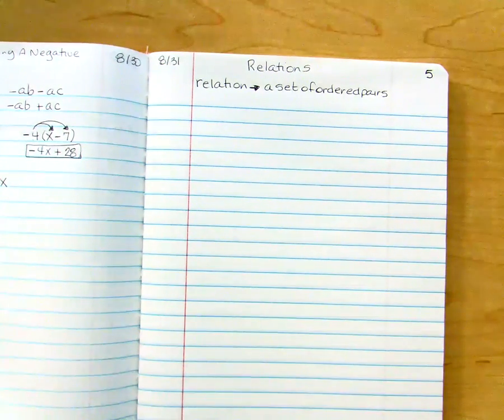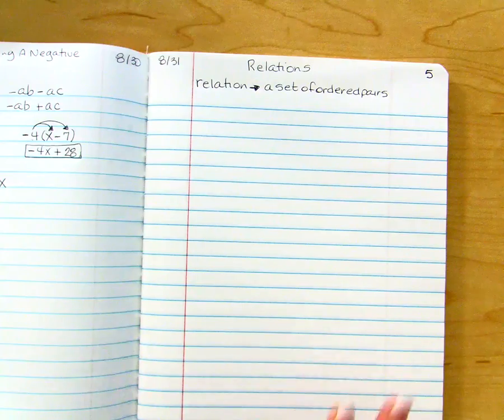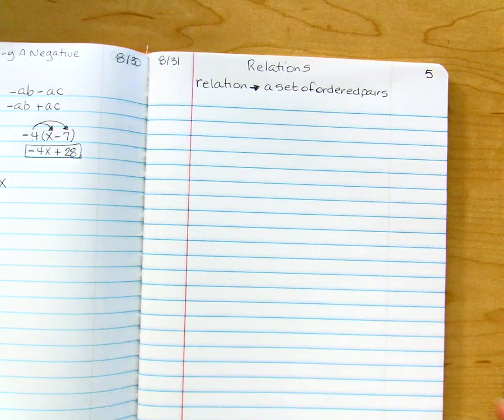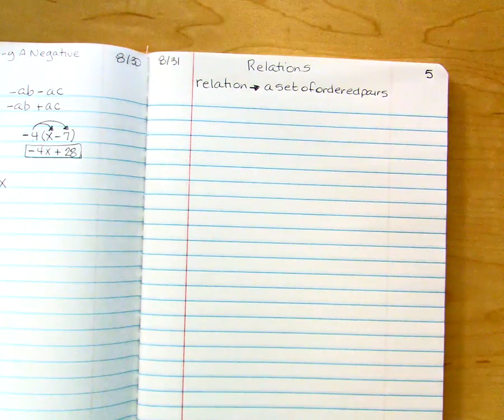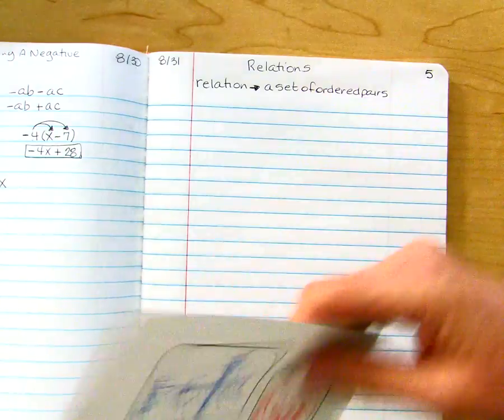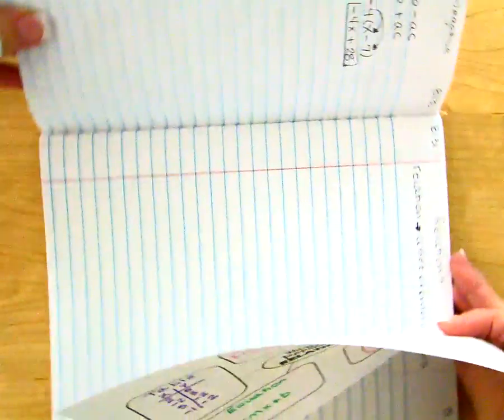Relations. A relation is a set of ordered pairs, and this page is specifically about ways to represent those. You should have a handout that looks like this, and you need to fill that out. So let me turn the book sideways.